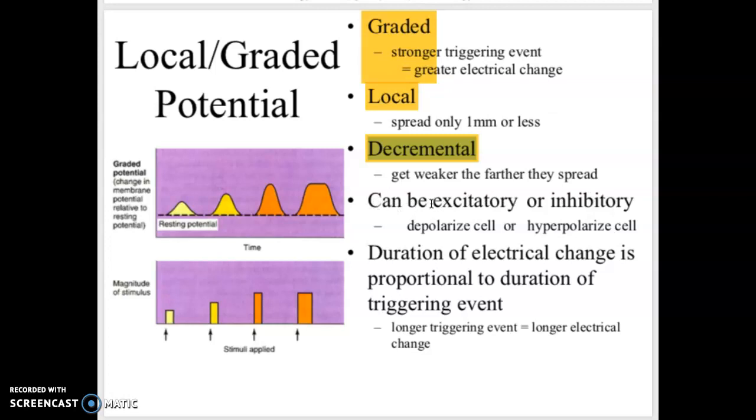Local potentials can be excitatory or inhibitory. They can either depolarize or hyperpolarize the cell. They can make it more likely to cause an action potential or less likely to cause an action potential. We'll go through each one of those in a little bit. The duration of the signal is proportional to the duration of the triggering event. If you look at the graph on the left, you can see the stimulus here on the far right lasts longer, so the graded potential also lasts longer.